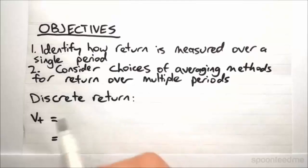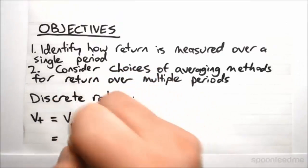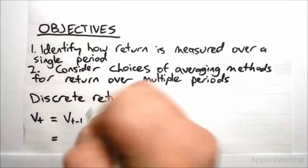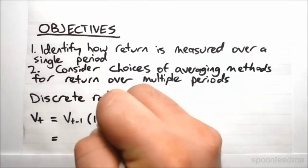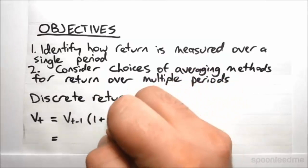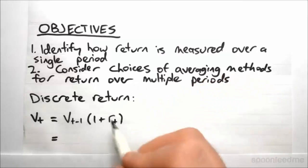Basically we say that the value of our asset at time t is equal to the value at the time before it, so at t-1, multiplied by 1 plus the rate of return for that time period. Notice we have the subscript t, which is corresponding to the value at the end of the period, not before.